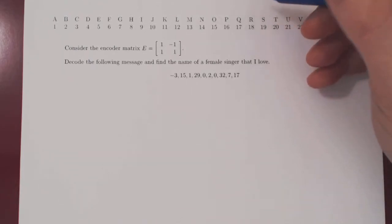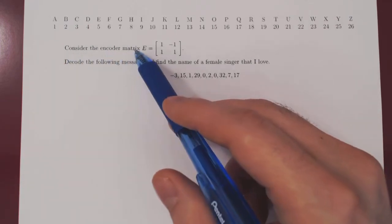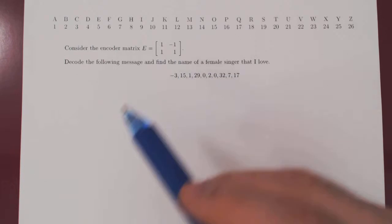Okay, so in this video we will consider a short example of cryptography. We consider the encoder matrix 1, negative 1, 1, 2, so a 2 by 2 encoder matrix.